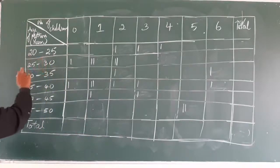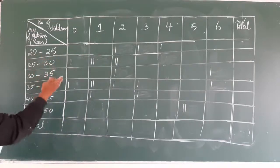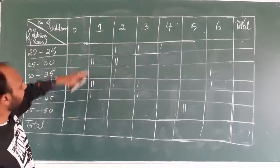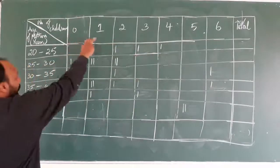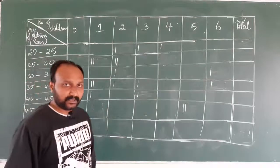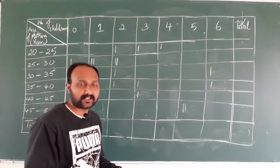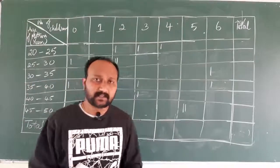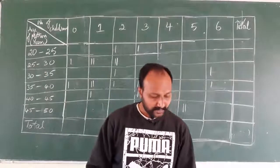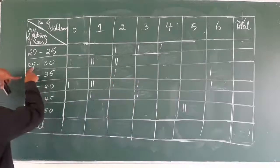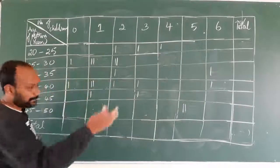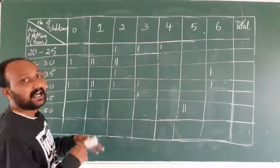For number of children, the data ranges from 0 to 6, so I have considered them individually: 0, 1, 2, 3, 4, 5, 6. They are considered column-wise, and in the rows we have ages of mothers. From the 20 pieces of data, we translate them into this table. The first data point — age of mother is 28, number of children is 1 — 28 comes in the class interval 25 to 30, so I place a tally mark. Similarly, for all 20 pieces of data, we place tally marks.